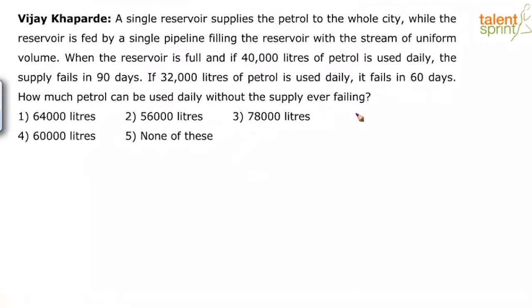Let's do a second reading to understand this in detail. There may be some confusion: when consumption is 40,000 liters per day it lasts 90 days, but when it drops to 32,000 liters per day it only lasts 60 days — as consumption comes down, the number of days should increase, but here the days are decreasing. The reservoir is fed by a pipeline filling it at a uniform speed.